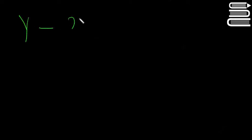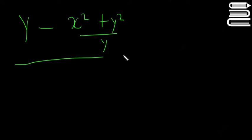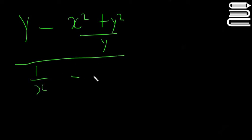I'm going to write the example out now, nice and big: y minus (x squared plus y squared) divided by y, and this all over 1 over x minus 1 over y.